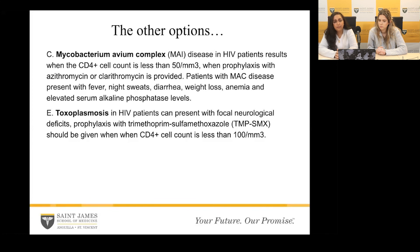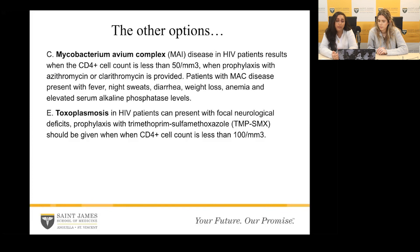Mycobacterium avium complex is prevalent among HIV patients and occurs when the CD4 count falls below 50. Prophylaxis can be given with azithromycin or clarithromycin once the count reaches that range. MAC disease presents with fever, night sweats, diarrhea, weight loss, anemia, and elevated serum alkaline phosphatase. Finally, toxoplasmosis presents with focal neurologic deficits, and prophylaxis with TMP-SMX is given when the CD4 count is less than 100 to help prevent it.